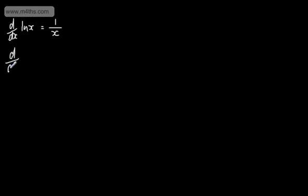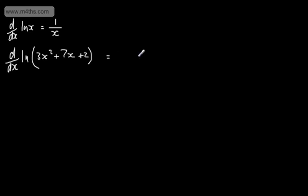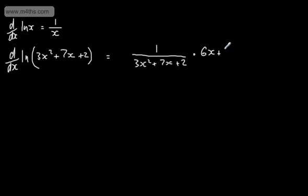If we looked at a function of a function and differentiated with respect to x — for example, the natural log of 3x squared plus 7x plus 2 — informally, we wrote this as 1 over the inside function (3x squared plus 7x plus 2), multiplied by the derivative of the inside function, which gives us 6x plus 7.